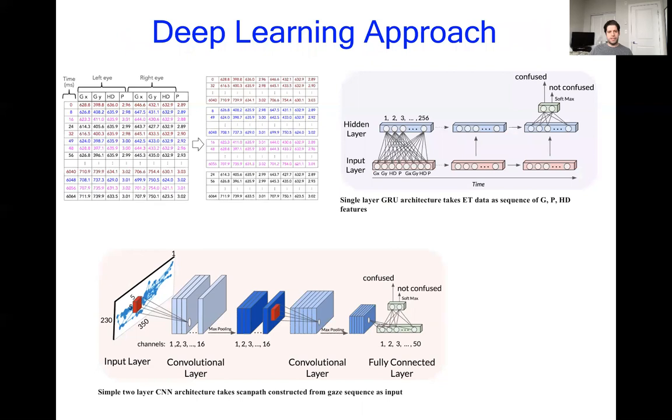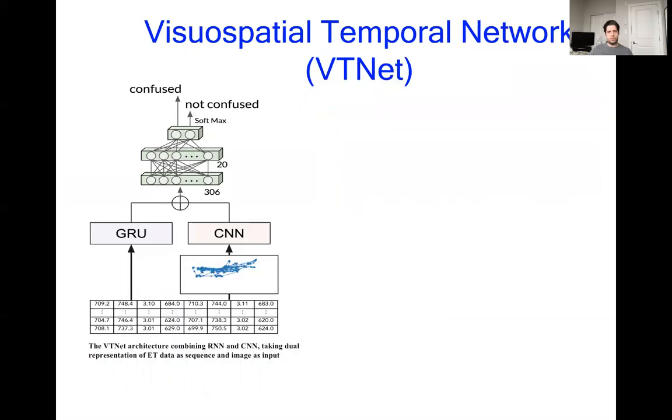So given these two methods now, the RNN to process the sequence numerically and the CNN to process the gaze sequence pictorially, we then combined them into a single model called the visual-spatial-temporal network, VSTNet for short. What this does is it has the GRU processing the raw sequence, the CNN processing the scan path picture, and we take the hidden state of the GRU, which is a 256-element vector, and the output of the